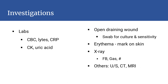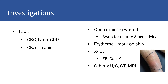Investigations include basic labs including inflammatory markers such as CRP. Creatinine kinase can help assess muscle damage, and uric acid can help assess for gout. Open draining wounds should be swabbed for culture and sensitivity. Erythema should be outlined with a marking pen to help determine the progression of the infectious process. Imaging can include X-rays, ultrasound, CT, and MRI, which can provide additional information to assist in diagnosis and subsequent management.